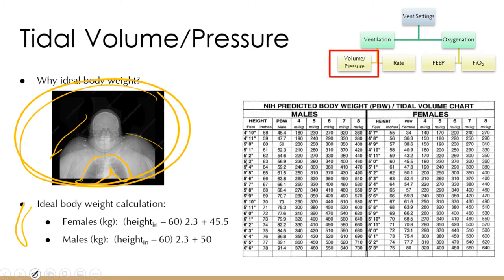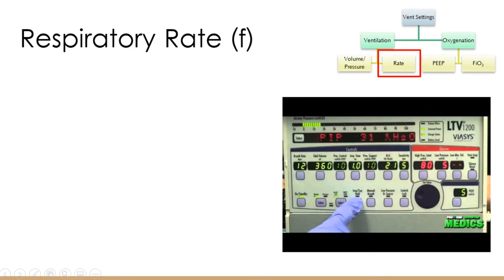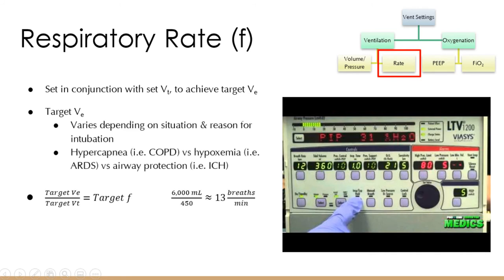Respiratory rate is set in conjunction with tidal volume. Whatever minimum minute ventilation you want, you take your tidal volume and divide into your target minute ventilation to get your respiratory rate. For example, if you want a minimum ventilation of six liters per minute and your tidal volume is 450 mL, you set rate at 13. Normal minute ventilation is five to seven liters per minute.